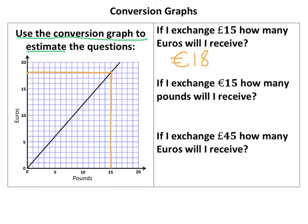For the second part, if I exchange 15 Euros, I'm going to go across from 15 and down. This is where the estimate bit comes in — I'm not bang on a line, so I'm going to estimate that at about £12.50. The mark scheme would likely accept anything between 12 to 13 pounds, and I've shown that I've read off the graph correctly.